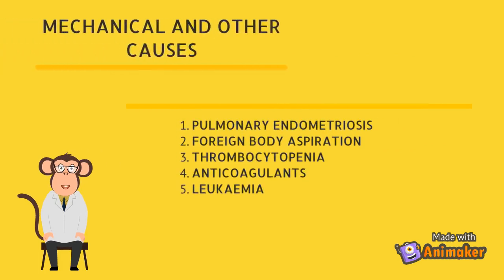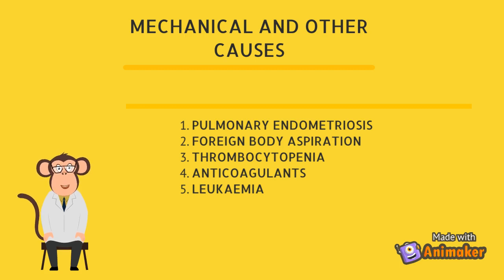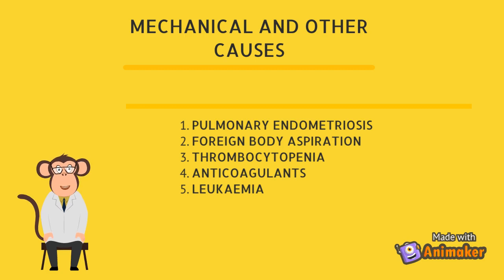Other causes include pulmonary endometriosis, which can cause cyclical bleeding known as catamenial hemoptysis. Foreign bodies can lead to irritation and bleeding. Additionally, thrombocytopenia, anticoagulants, and even minor trauma can cause hemoptysis.